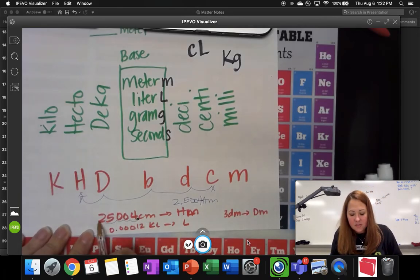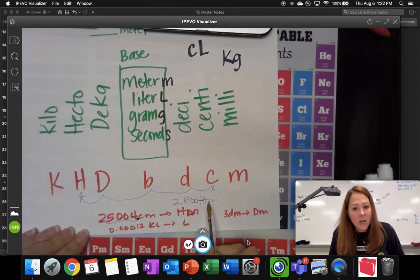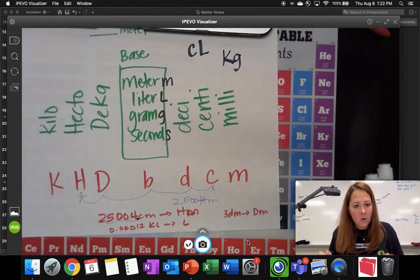So my answer here is 2.5004 hm. So this, the centi, which is pretty small, is the same as 2.5004 hm, hectometers, which is a very large unit.